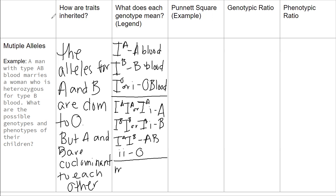The last thing we do is write our parents. The man has type AB blood, so his genotype is I^A I^B — because A and B are co-dominant and there's only one way to make AB blood. Mom is heterozygous for type B blood, so she could have two B alleles or a B and an O allele. Since she's heterozygous, her genotype must be I^B i. Let's do our Punnett square.